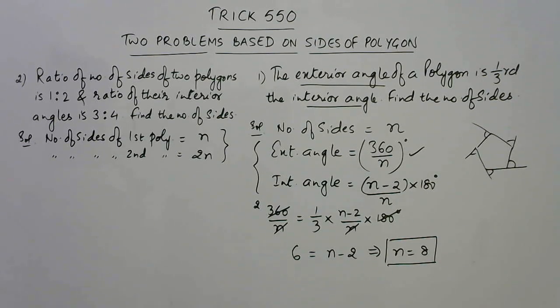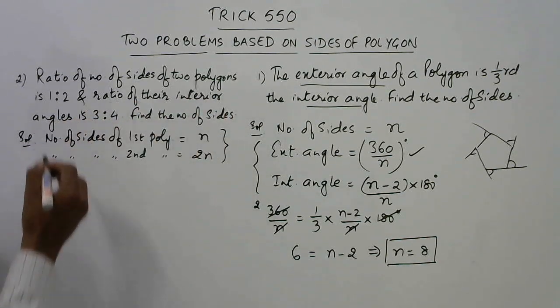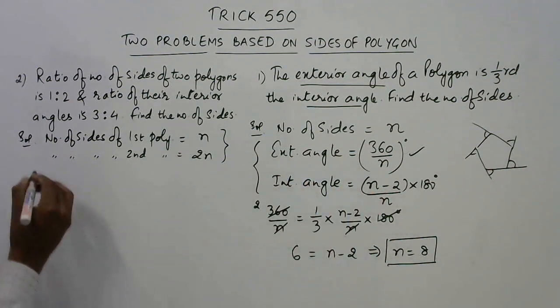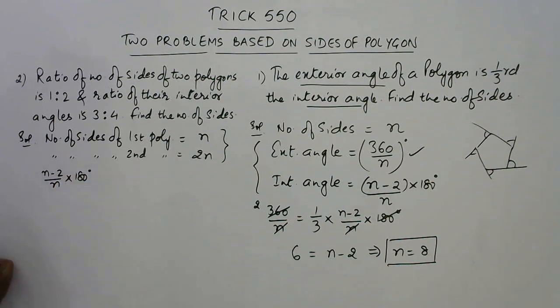Now, let us formulate the equation. The ratio of their interior angles—we already know the interior angle of a polygon is represented by (n minus 2) upon n into 180, and that is the formula for finding the interior angle.